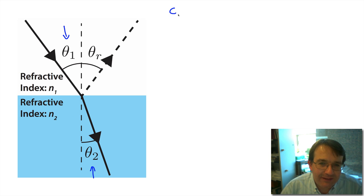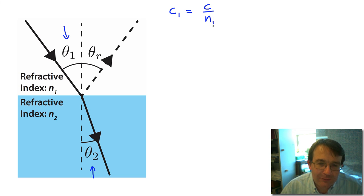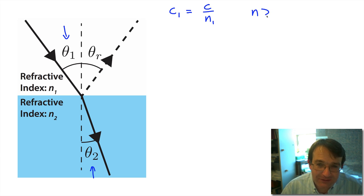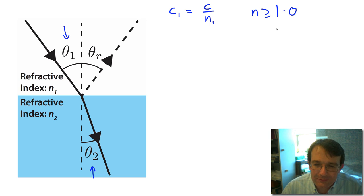We've also introduced a new property of a material called the refractive index. The refractive index is a measure of the speed of light in that material — specifically, the speed of light in the material equals the speed of light in vacuum divided by the refractive index. The refractive index is always greater than or equal to one, except for very special cases such as metamaterials where you can get negative or unusual refractive indices. For all normal materials we'll deal with in this course, the refractive index is greater than or equal to one.